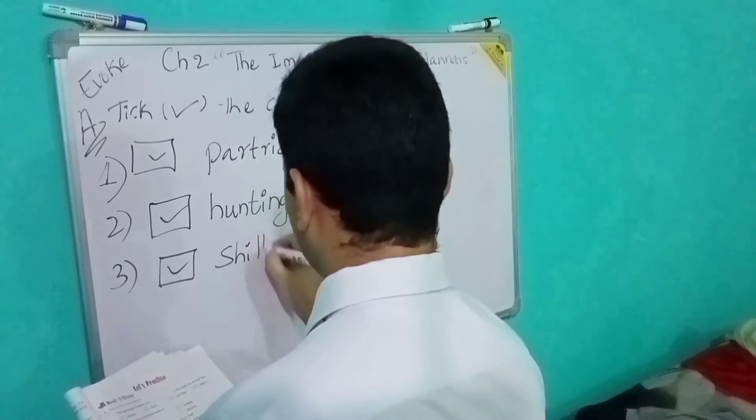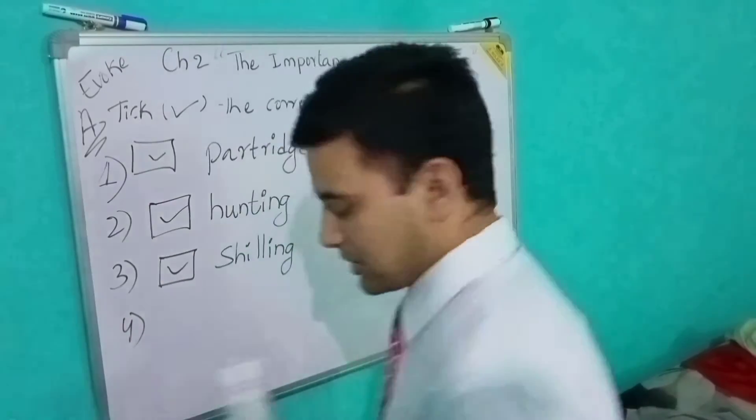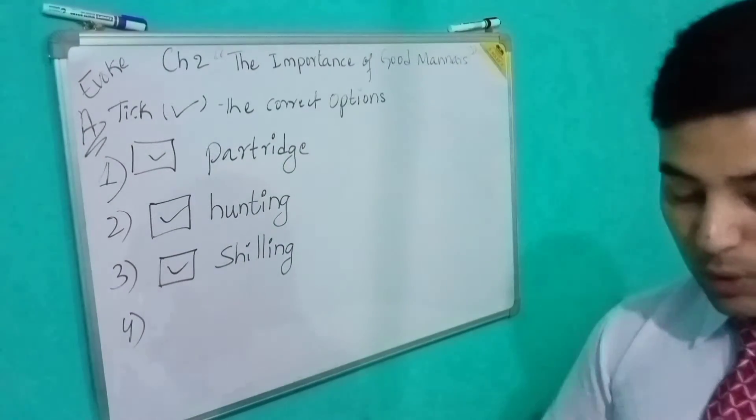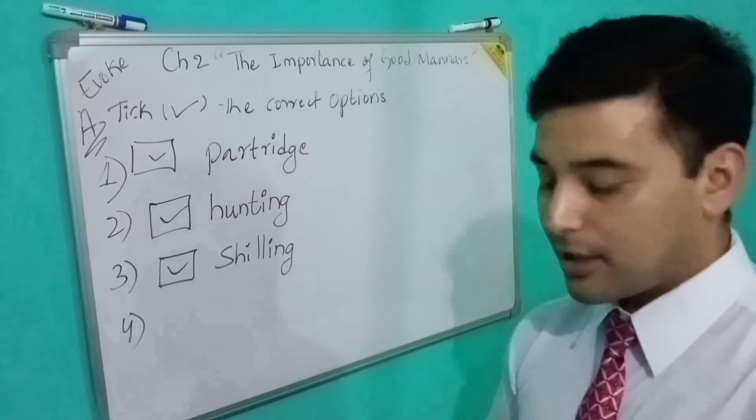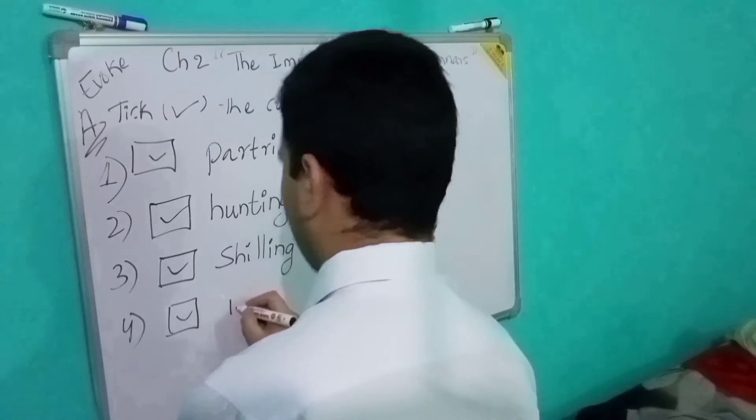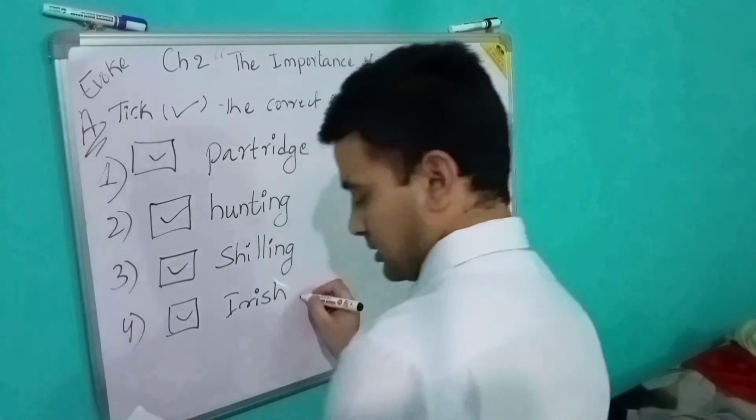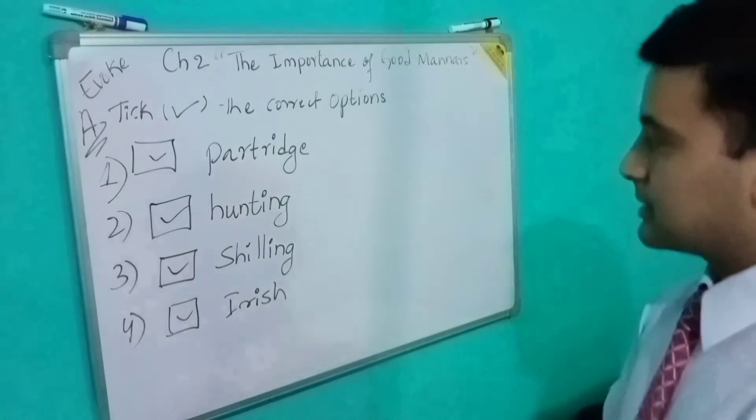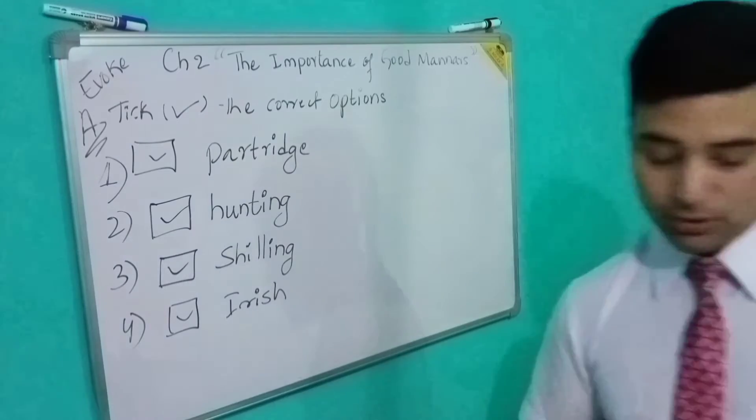Number four: Dean Swift was a dash. Water, English, American, Irish, or Russian? Irish. It is Irish. Write Irish: I-R-I-S-H. These are the answers. You just have to copy in your book and try to understand also.